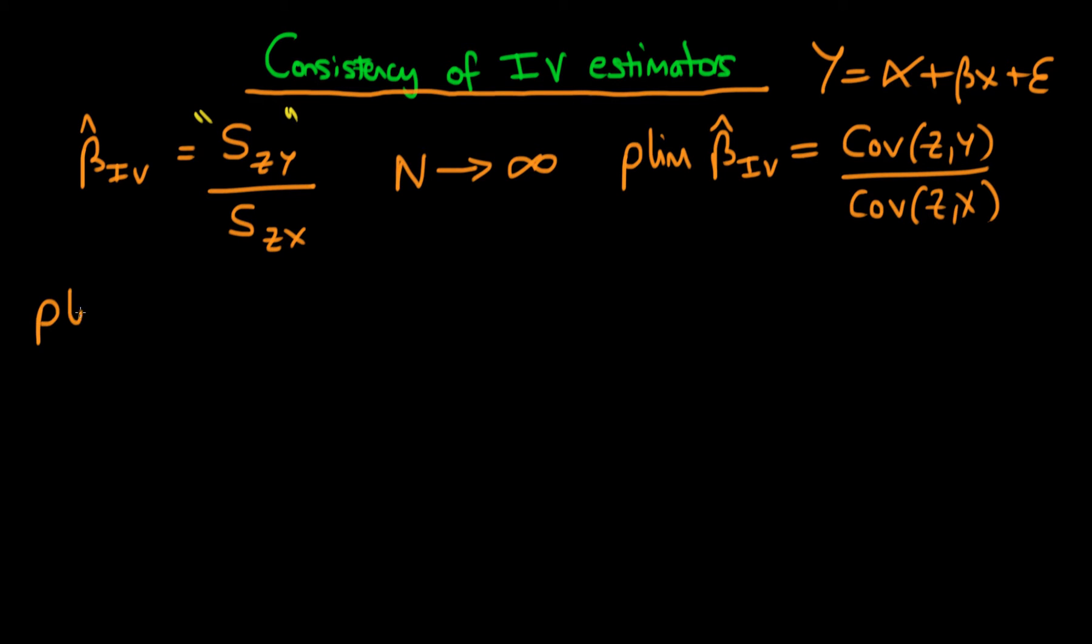Using this expression for the probability limit of beta hat IV and using the fact that we know the explicit form of Y, we can substitute in for Y using the model which is given above and we get something which looks like this. We get the covariance of Z with alpha plus beta X plus epsilon, and the denominator doesn't change. So we still have the covariance of Z with X on the bottom.